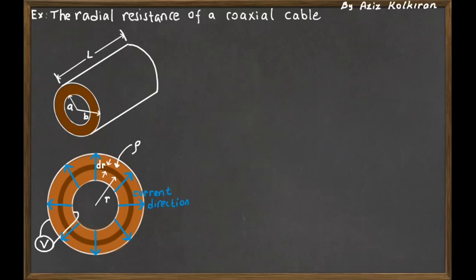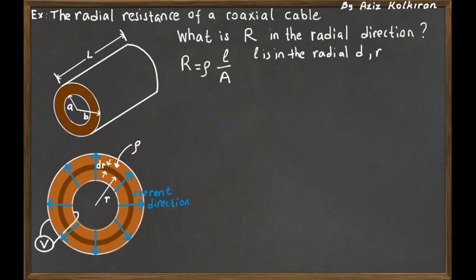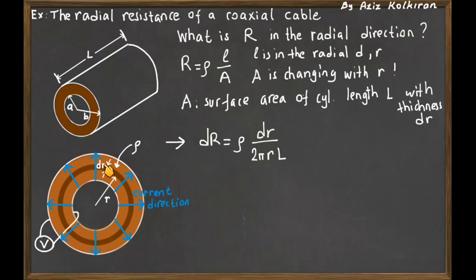The resistivity of the material is ρ. Using the general expression R = ρL/A, the length for each infinitesimal shell is dR, and the cross-section area is the circumference 2πR times the height L. So the infinitesimal resistance dR_shell = ρ dR / (2πR · L). Everything is expressed in terms of the single variable R.